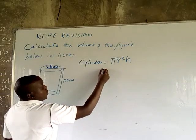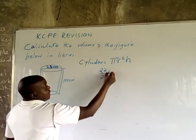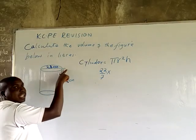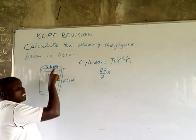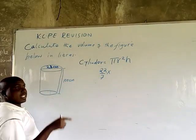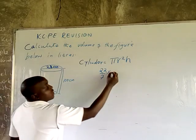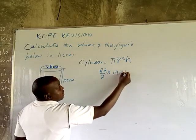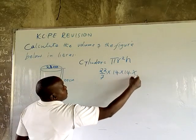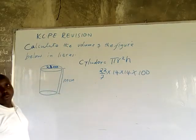Pi is 22 over 7. We are given the diameter, not the radius. When given the diameter, the radius is half the diameter. So the radius is half of 28, which is 14. So we have 22 over 7 times 14 times 14 times height, which is 100.